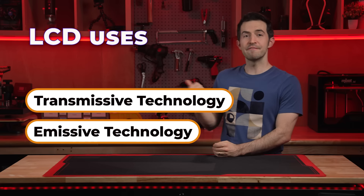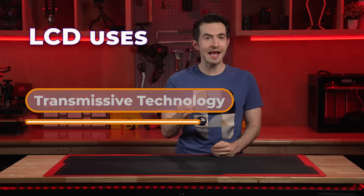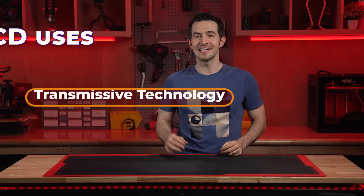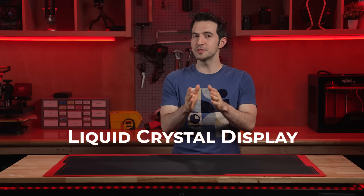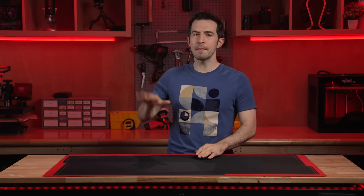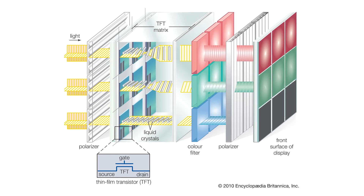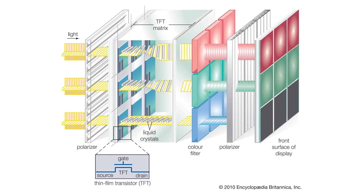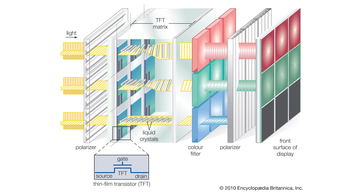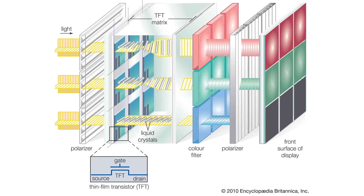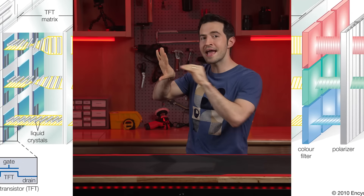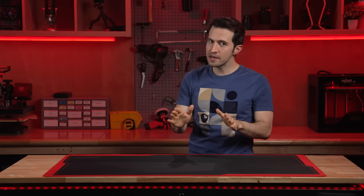I didn't always know this. If you selected transmissive, you're exactly right. LCD stands for liquid crystal display. Basically, you've got a panel of liquid crystals and a bulky fluorescent light panel behind them. The light from the panel shines through — it transmits through the pixels to light them up. Transmissive.